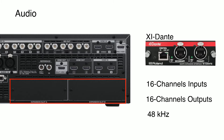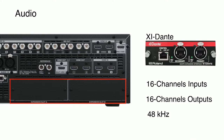Looking at the audio structure of the V1200 HD: on the left-hand side are the inputs — 92 different inputs. SDI 1, 2, 3, and 4 each have 16 channels of audio. Then HDMI 1, 2, 3, and 4, plus XLR or analog inputs on the back, as well as expansion cards. For Dante, you can de-embed audio from SDI signals through the expansion card as well. So you have direct patching of 92 inputs and 92 outputs — pretty powerful in a video mixer.